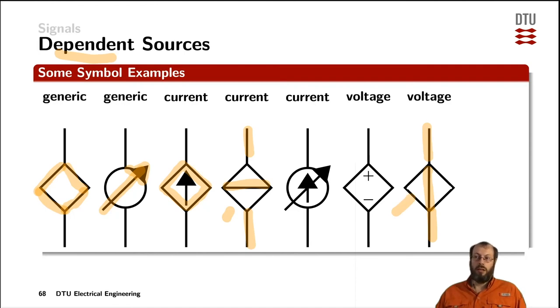This is another notation using the arrow inside the symbol to indicate that it's a current source. And then the arrow goes through the symbol indicating that you're speaking about a dependent source. Or this is a DC voltage source indicated by the polarity of it, and then indicating that it's a dependent source by drawing the symbol squared.